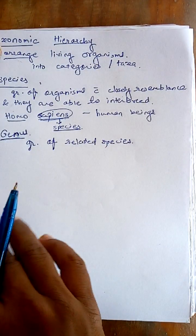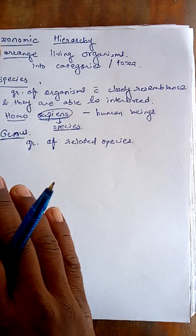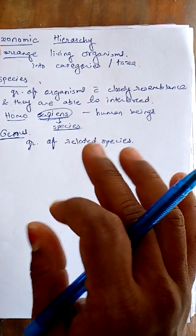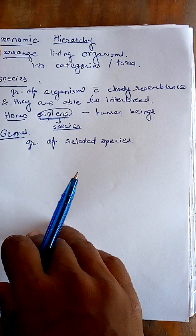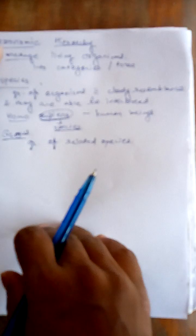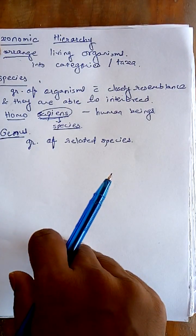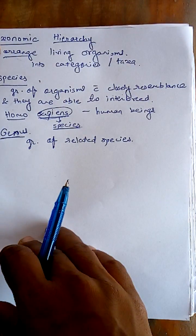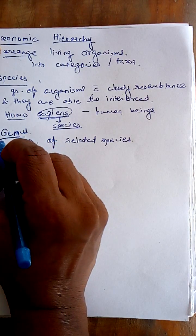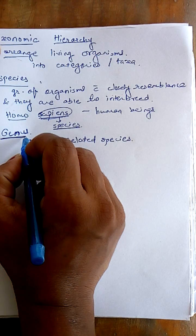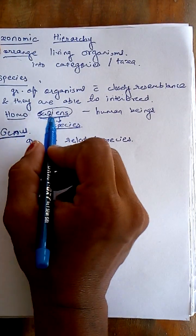Such common features or common characters are called co-related characters, and these co-related characters may appear in a particular species — for example, the number and position of bristles on the wing of insects. That character remains common in many species. So if it remains common in many species, we make a group of them and collectively call that group by a specific name — that is the genus. For example, in Homo sapiens, 'Homo' is the genus.